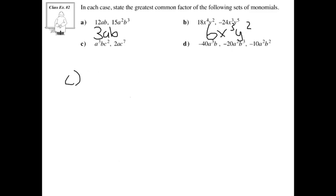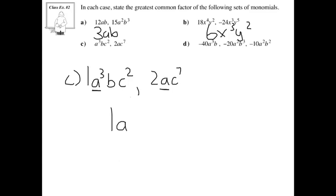For c, we have a³bc² and 2ac⁷. If it helps, let's put a 1 in front of the first term. The greatest common factor between 1 and 2 is just going to be 1. Now, we have a to the power of 3 and a — we know there's going to be at least one a in each. Taking a look at b, there's no b on the second term, so that's not going to be part of your greatest common factor. Next, we've got c — you've got c² and c⁷, so there's going to be at least two c's, making it c squared. So your answer here is going to be ac².